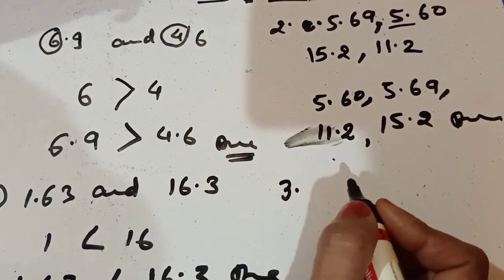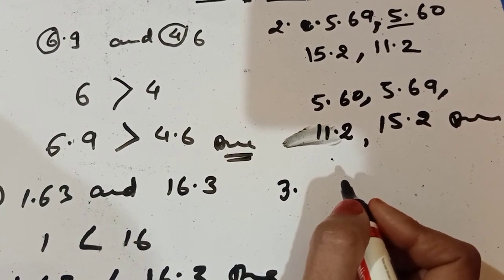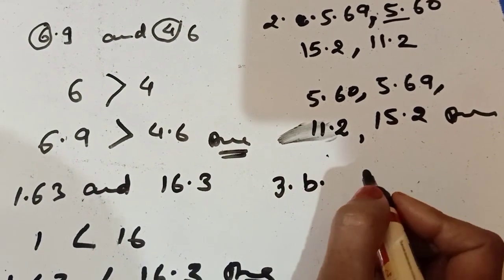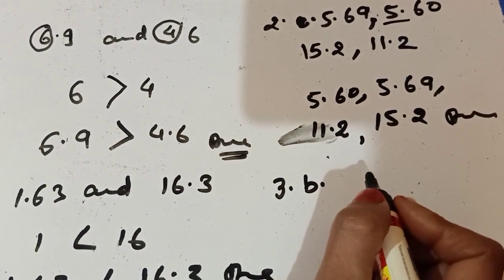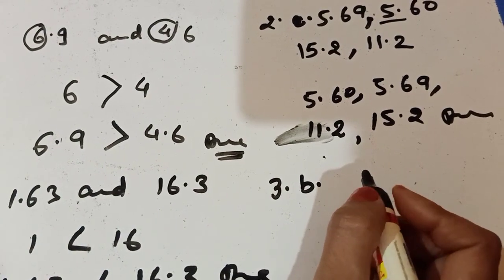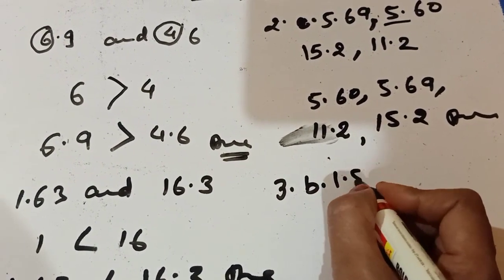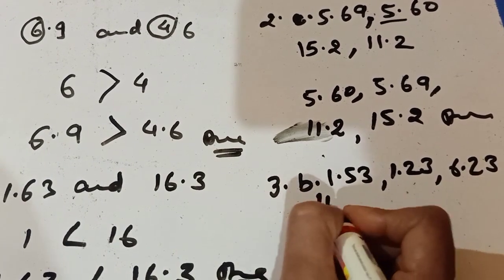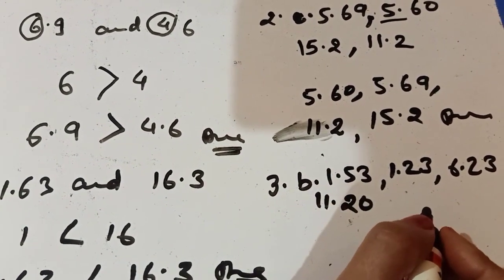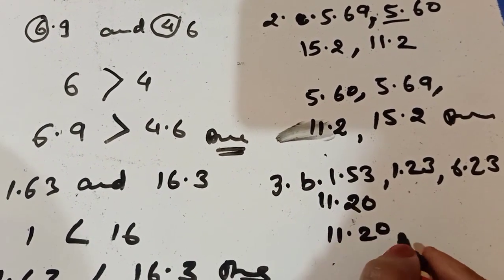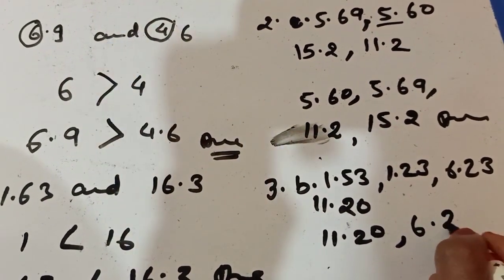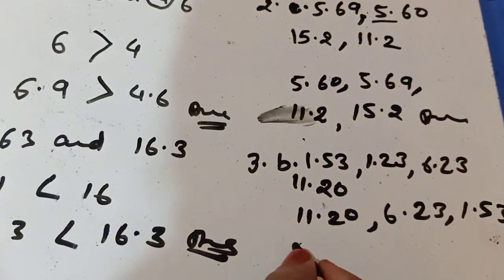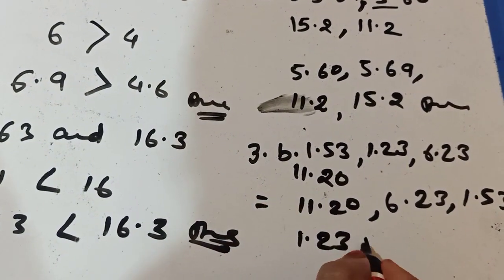Now question number 3. From question number 3 I am taking one question that is question number B and it is arrange the following decimal in descending order. So 1.53, 1.23, 6.23, 11.20. So bigger to smaller. Which one is bigger? 11.20 is bigger. After that 6.23. After that 1.53 and after that 1.23. So it is answer of this question.